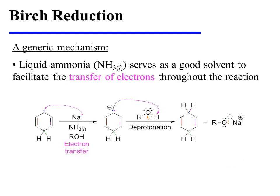Liquid ammonia serves as a good solvent to facilitate the transfer of electrons throughout the reaction. Another point worth noticing is that after the metal has donated the one electron in its valence shell, it becomes a cation.